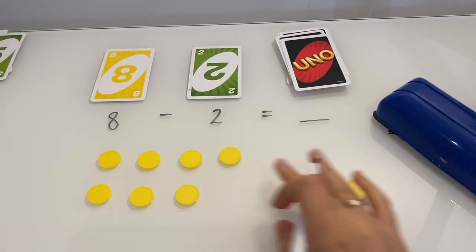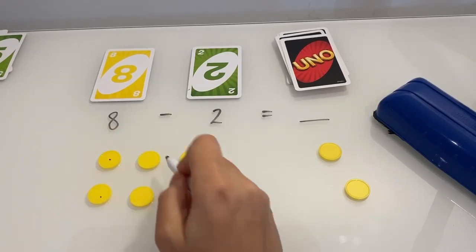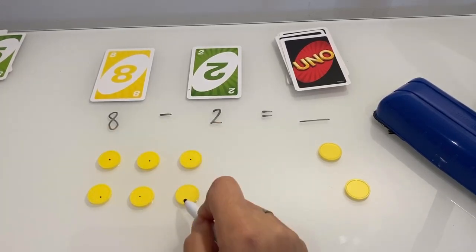So if we're taking away two, how many are left? One, two, three, four, five, six.